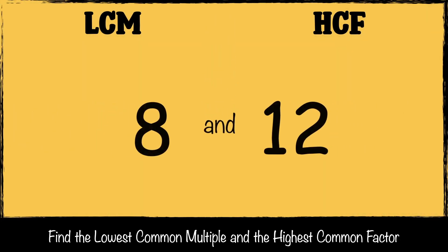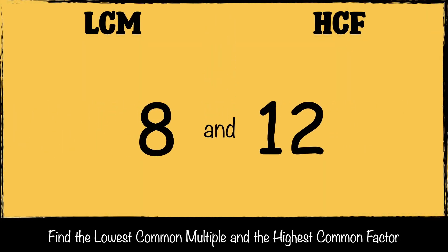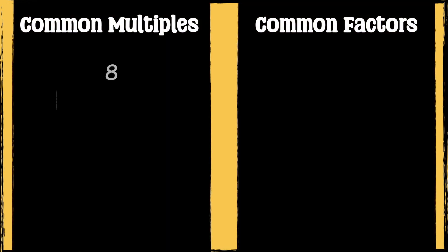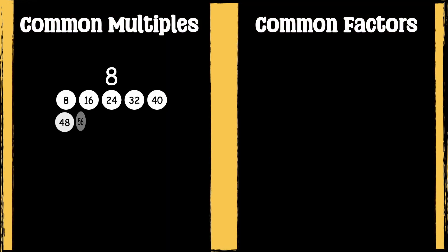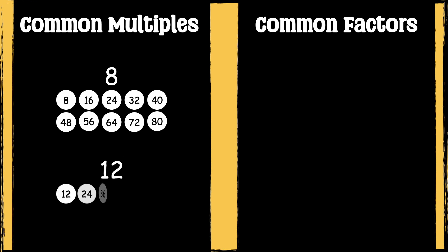So for the first example, we're going to find the lowest common multiple and the highest common factor of 8 and 12. Here are some of the multiples of 8 and some of the multiples of 12.